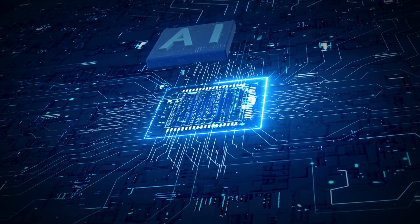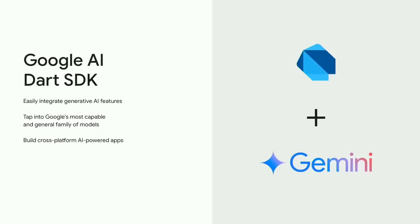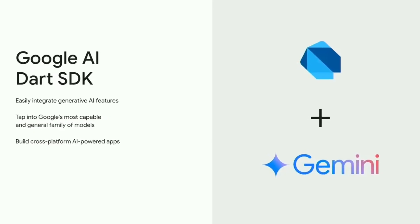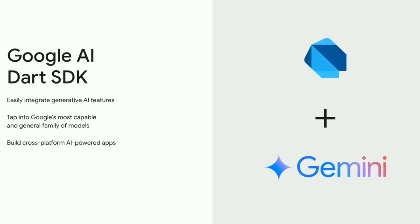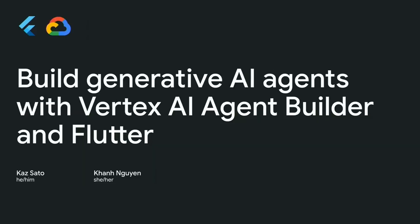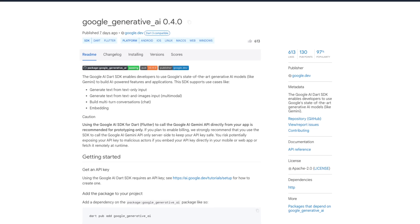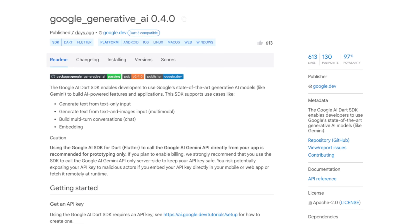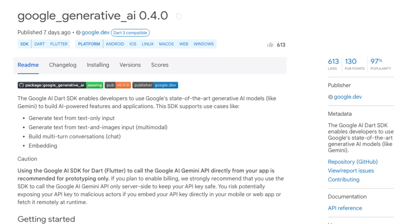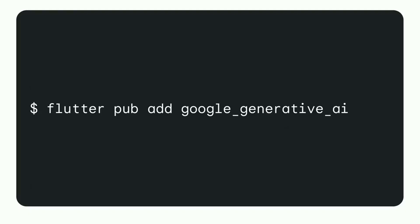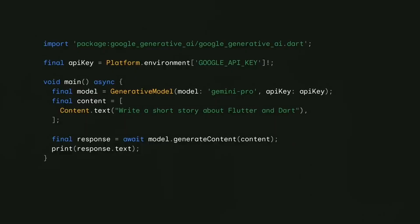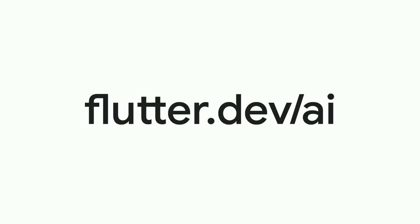AI has become indispensable, and especially for Flutter, AI will play a significant role. The Flutter team introduced the Google AI Dart SDK, which enables developers to integrate AI features like text generation and chatbots into their apps. This SDK allows access to Google's Gemini models, which are among the most powerful language models. It's easy to handle and integrates into a Flutter app with minimal setup. For more information, check out flutter.dev/ai.